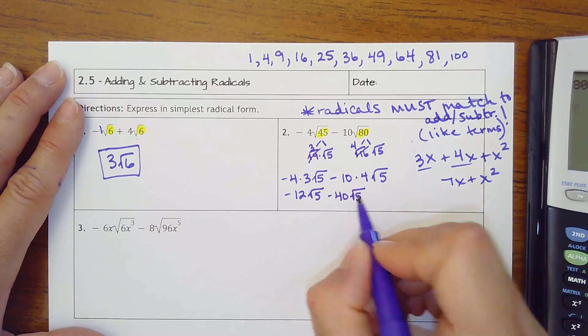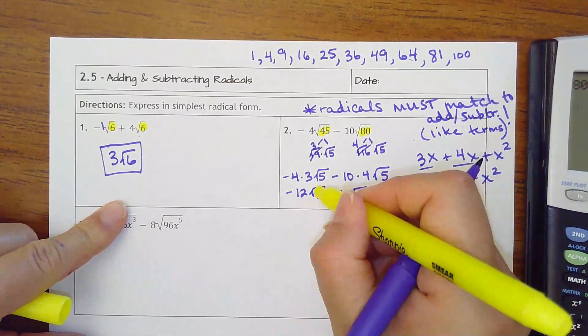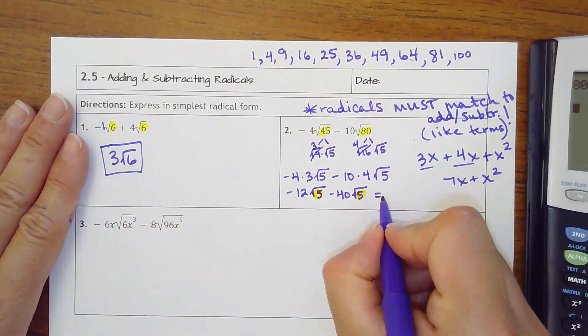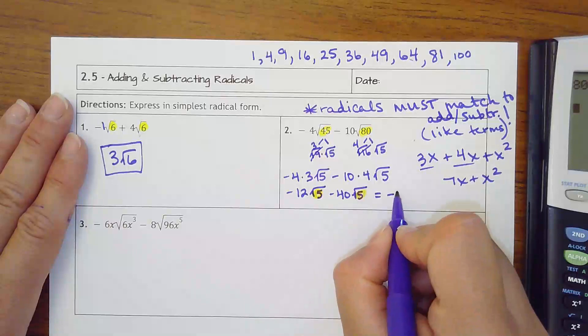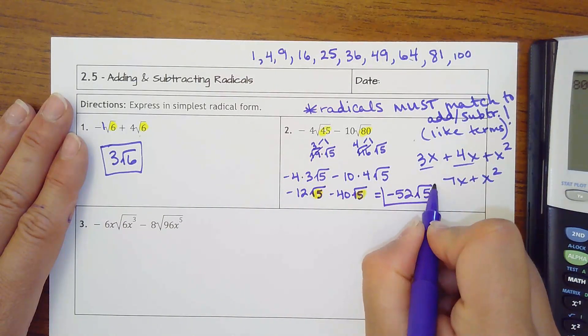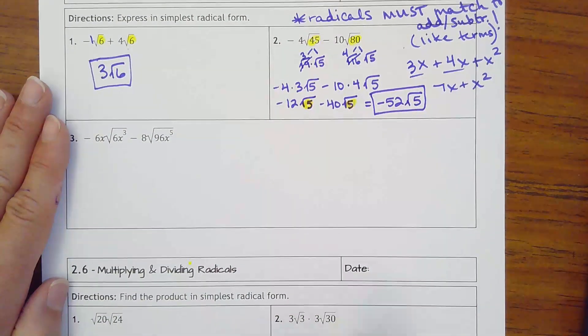Negative 12 minus 40, because now I can put these together since they both have square root of 5. Negative 12 and negative 40 make negative 52 square root of 5. It's all about using the rules we know to simplify and then combining your like terms.